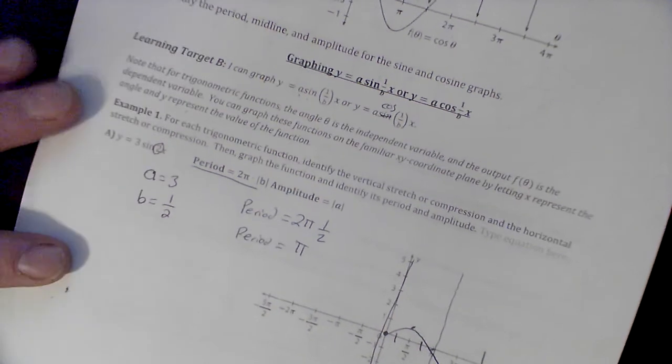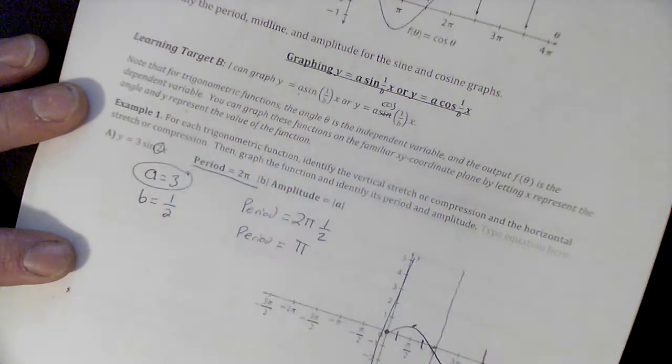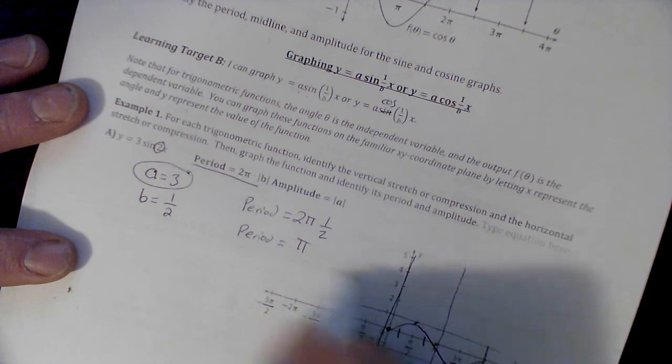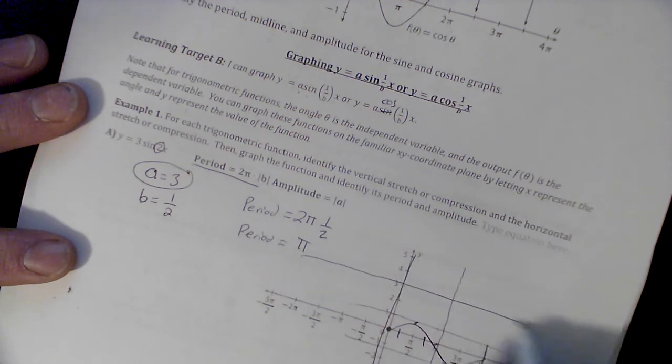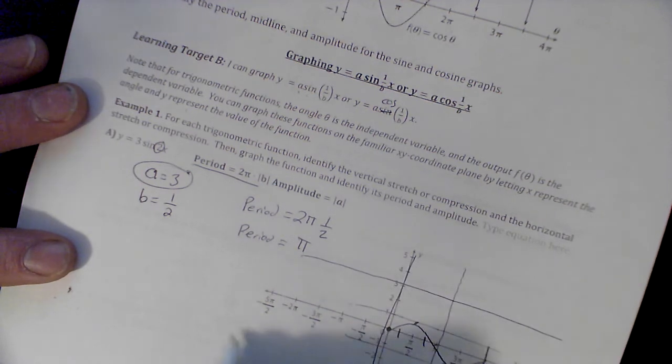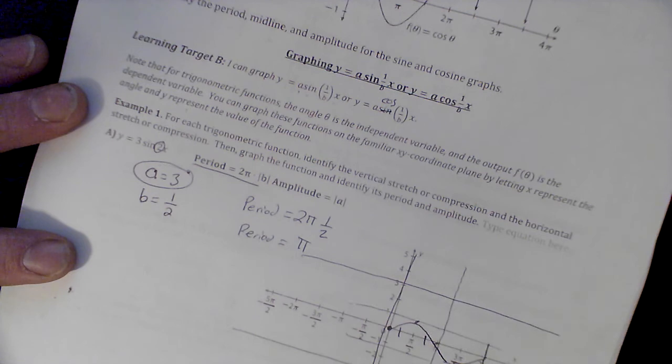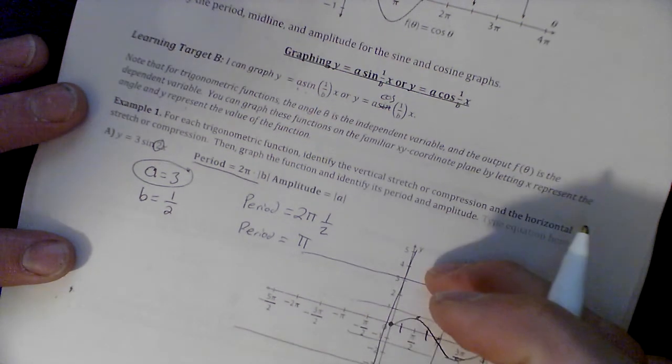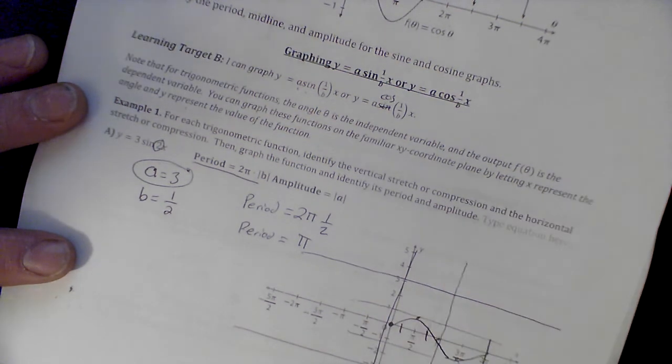My amplitude has stretched my graph up, so it no longer tops out at one and negative one. It's three times larger. My amplitude now goes all the way up to 3 and all the way down to negative 3. So we've had a horizontal compression and a vertical stretch.